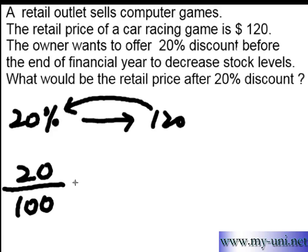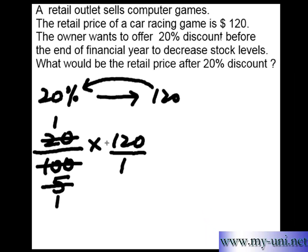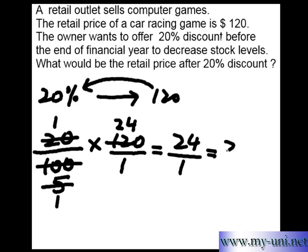In this case the amount is $120. So we calculate 20 over 100 times 120. Simplifying: 20 times 120 divided by 100. Working through the multiplication: 20 times 120 gives 2400, divided by 100 equals 24. So the result is $24.